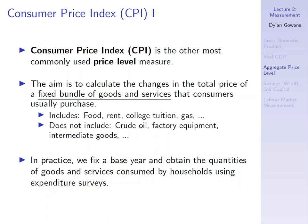You find this bundle of things that people generally tend to buy and set some quantities — maybe people tend to buy 10 tomatoes in a year, one lamp, two TVs. That's your bundle. Then you track how the total price of that bundle changes from year to year. Importantly, this includes things that consumers buy: food, rent, college tuition, gas. It does not include things consumers don't buy, like crude oil, factory equipment, intermediate goods, or large quantities of screws. These are not included in the consumer price index.